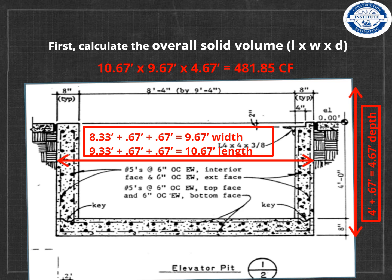Eight feet four inches is your interior width, which equals 8.33 feet. To that, add your eight-inch walls on either side. Eight inches divided by 12 inches equals 0.67 feet.